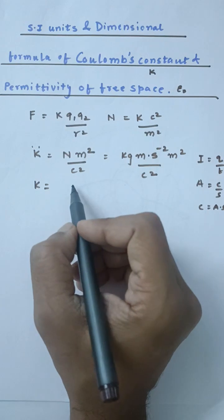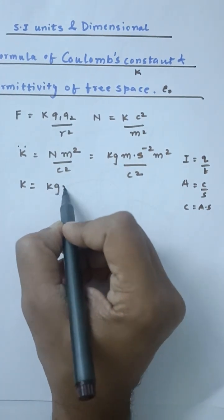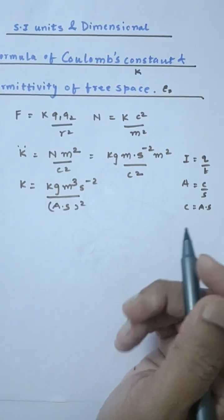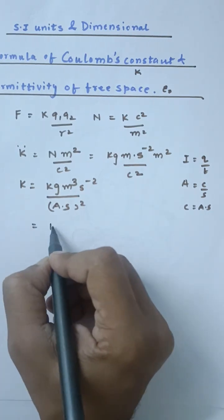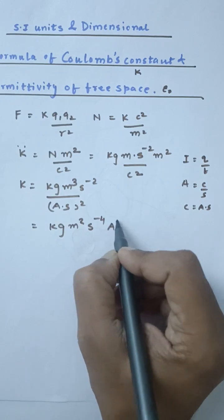So dielectric constant K can be further rewritten as kg·m³·s⁻²/(A·s)², which means this can be written as kg·m³·s⁻⁴·A⁻².